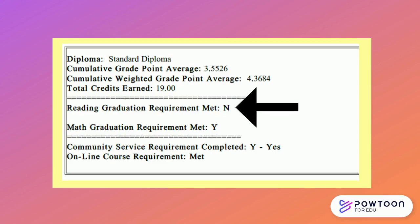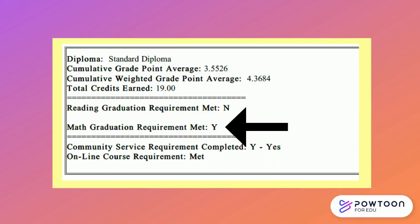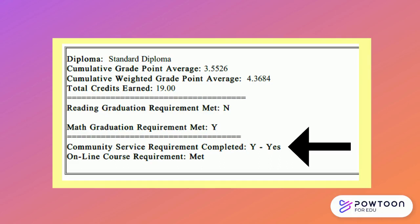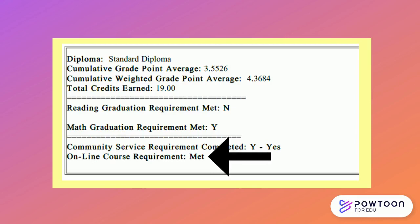The next line refers to the reading English language assessment that 10th graders take at the end of the year. If you have taken and passed the 10th grade reading test you will see a Y for yes; if you did not pass or have not taken it yet, you will see an N for no. The math graduation requirement is the Algebra 1 EOC — this student has already taken and passed that test. The next line is the community service requirement; if you have completed the 20 hours of community service for graduation this will be marked as yes. This is followed by the online course requirement. Students who have completed an entire course online will be marked as having met the requirement; if you still need to take a course online you will see not met.